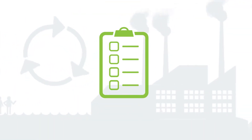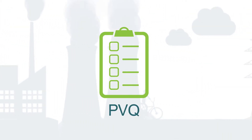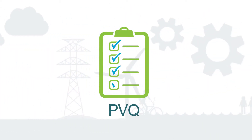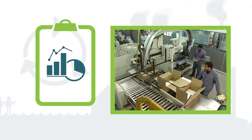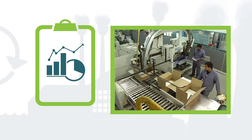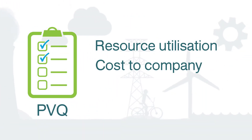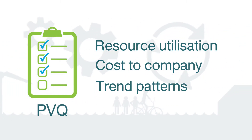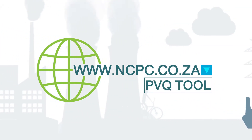The first step is completing a pre-visit questionnaire, or PVQ. The PVQ is a checklist used to gather preliminary data on your organisation's products, processes, or services relating to resource utilisation, associated cost to company, and resulting trend patterns. A PVQ tool with easy instruction is available on the NCPC website.